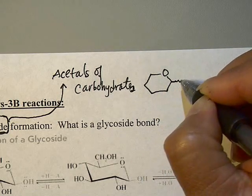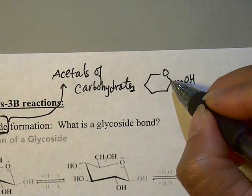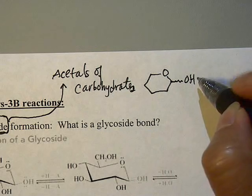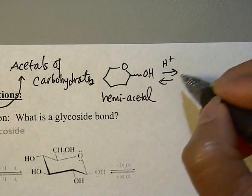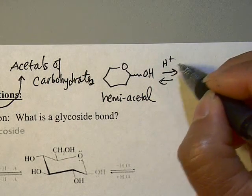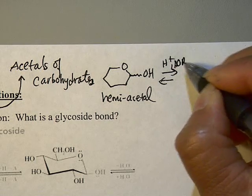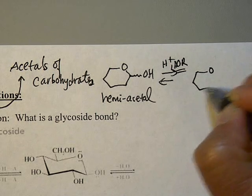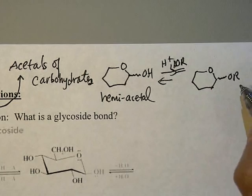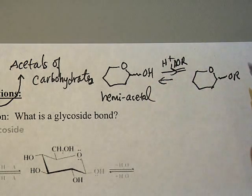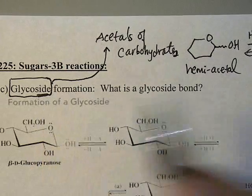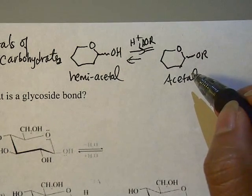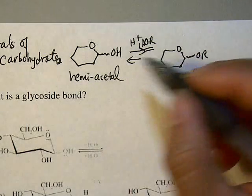Let's briefly review the chemistry. Without drawing all the OHs, consider glucose: the anomeric carbon can have an alpha or beta OH — this is the hemiacetal form, and in solution the alpha and beta forms interconvert. If you then react that hemiacetal with another alcohol, a second molecule of alcohol adds to the OH, water is extruded, and what you get is an acetal. That acetal is what we call a glycoside in sugar chemistry. Let's review how an acetal differs from a hemiacetal.